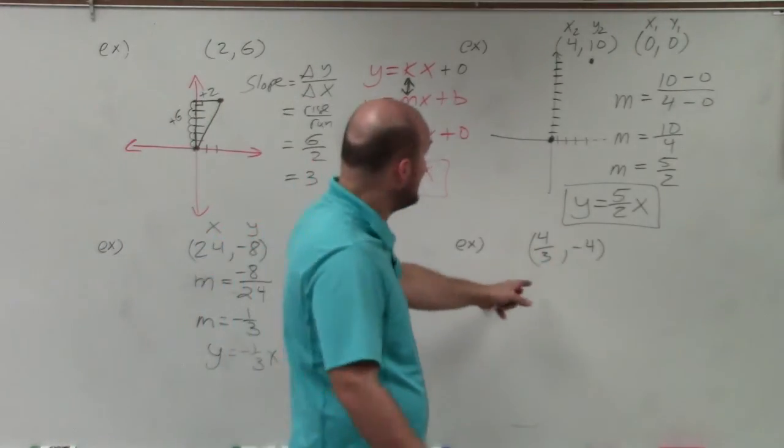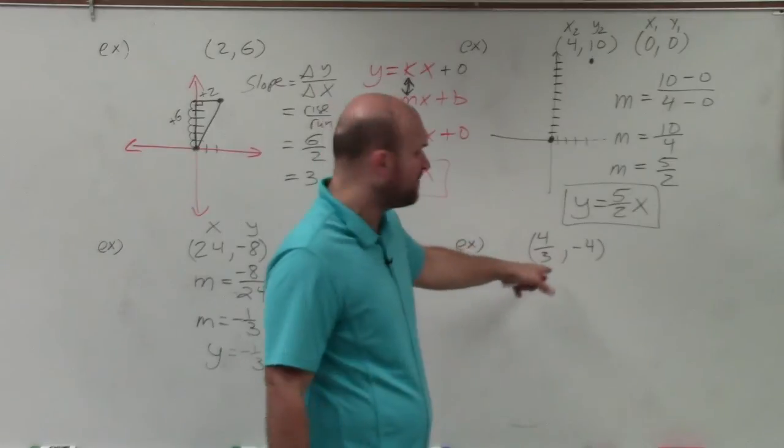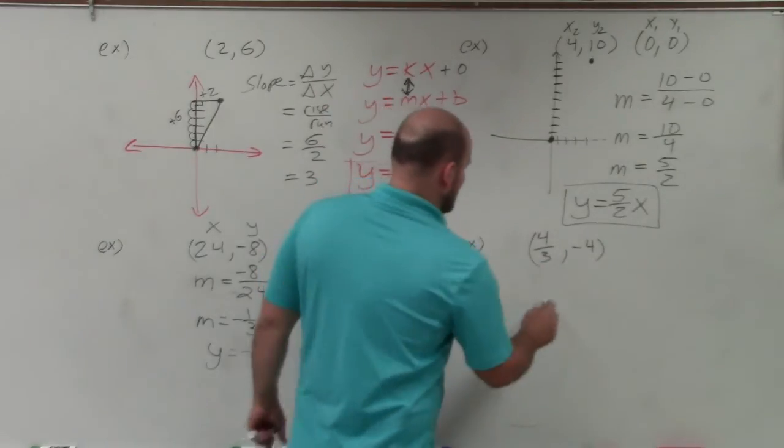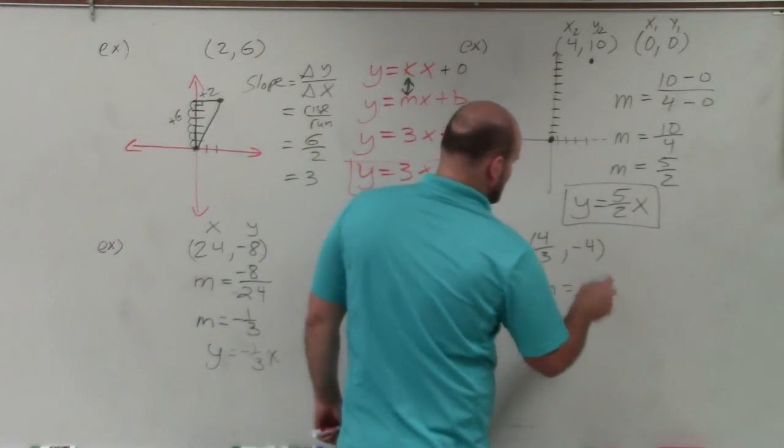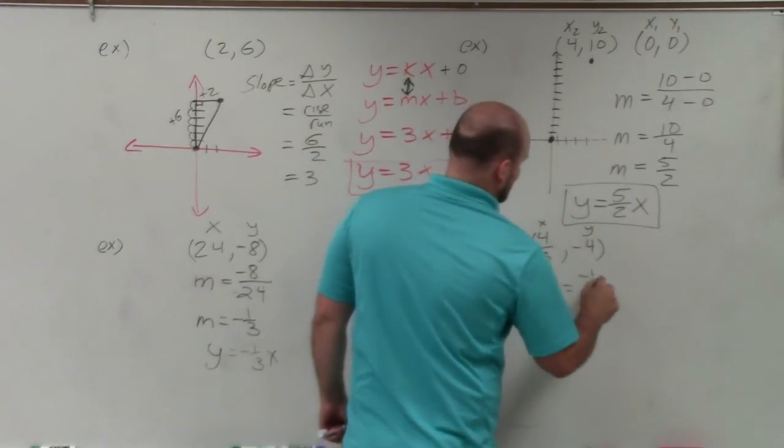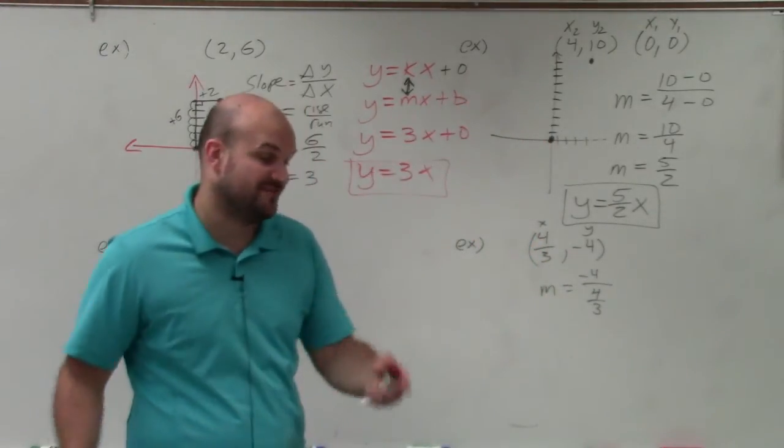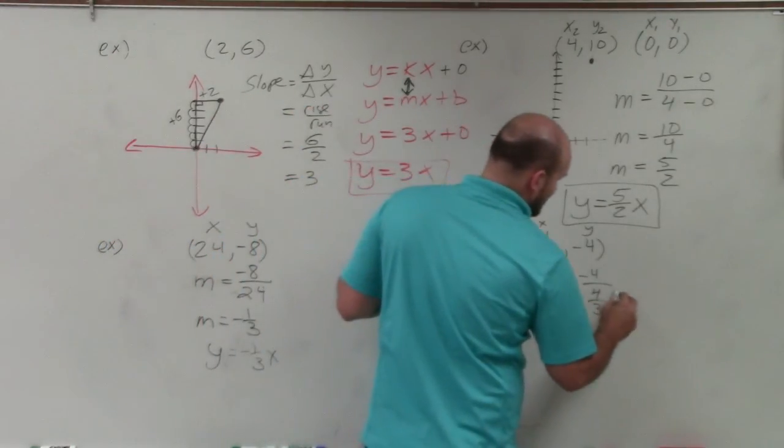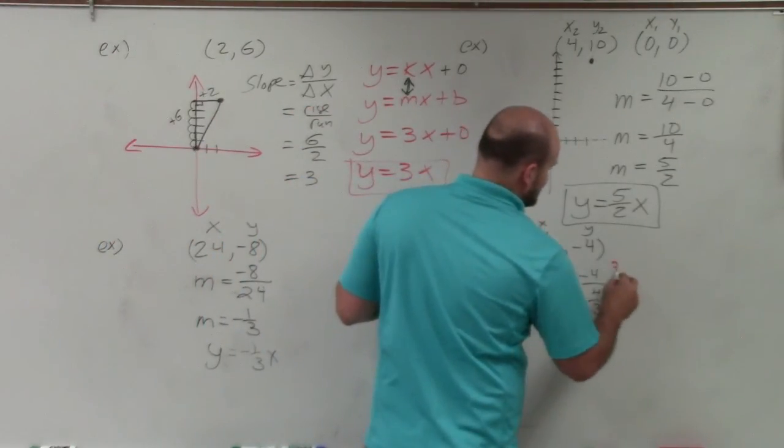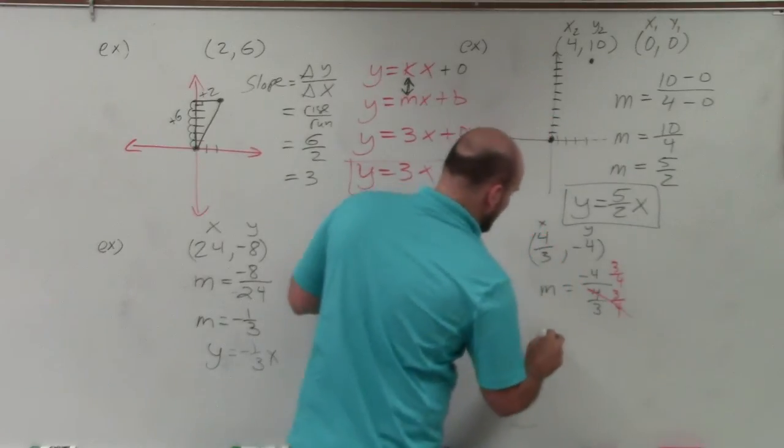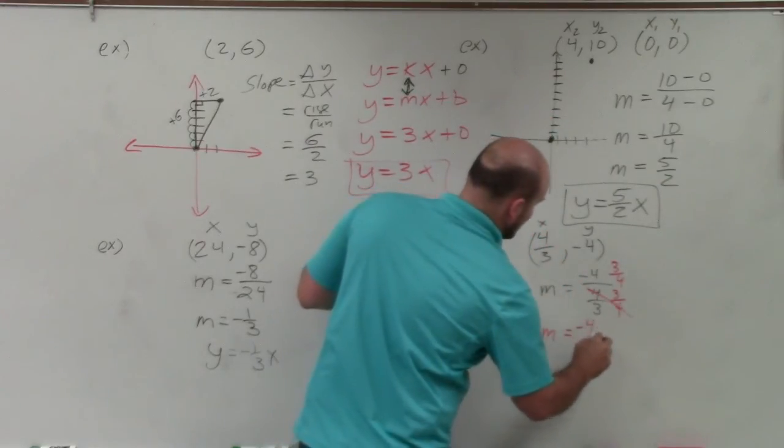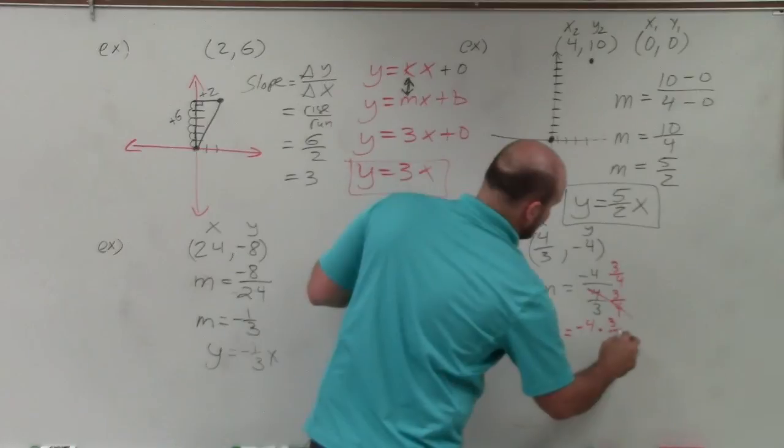And I like using that method, because this one, the graph, 4 3rds, that's not going to be fun, right? So I could just do m equals y over x. Negative 4 over 4 3rds. Well, what do you do when you have a number divided by a fraction? You get rid of your denominator by multiplying by the reciprocal. That goes to 1. You're left with m equals negative 4 times 3 4ths.